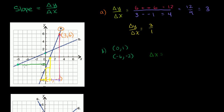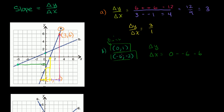What is our change in x? We could even count it — it's 6. But if you don't have a graph to count from, you could take your finishing x position, which is 0, and subtract your starting x position: 0 minus negative 6. So the change in x is equal to 6. And what is our change in y? We have to do 1 minus negative 2, which is the same thing as 1 plus 2, equal to 3. So it is 3 sixths, or 1 half.